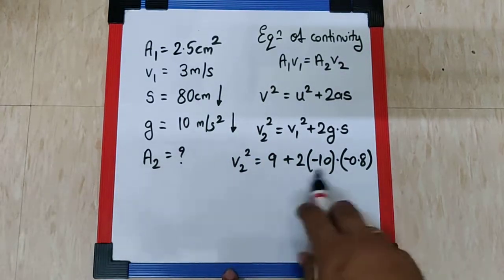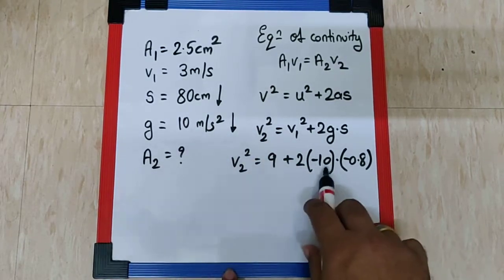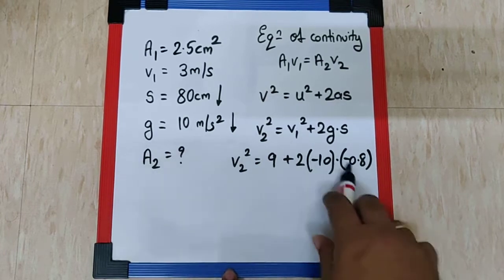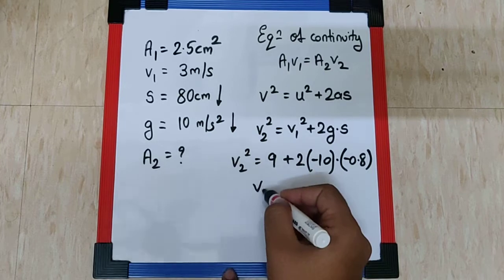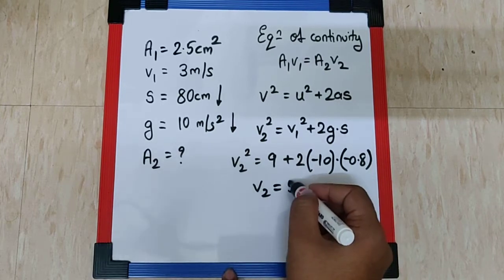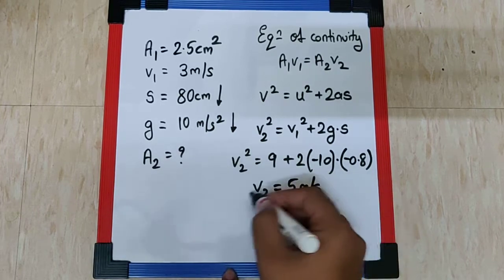Now if you calculate this you get 16. 10 into 0.8 is 8, 8 into 2 is 16, and minus minus gets cancelled. Now 16 plus 9 is 25. So V2 has to be square root of 25 which is 5 meter per second.